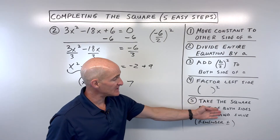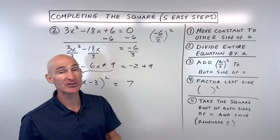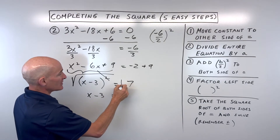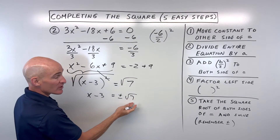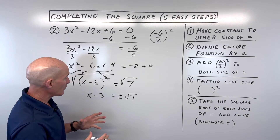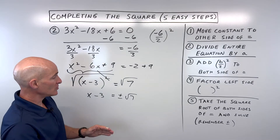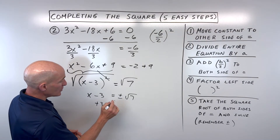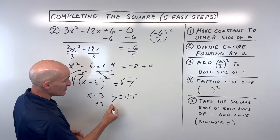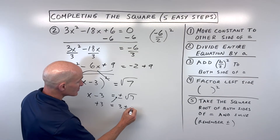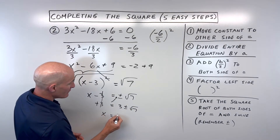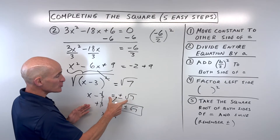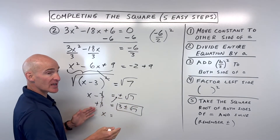The last step is to solve by taking the square root of both sides of the equation — remember the plus or minus. The square and square root cancel each other. We get plus or minus the square root of 7, which is not a perfect square so we leave it as is. You can either split it into two separate equations, or more efficiently, add 3 to both sides and write it as x equals 3 plus or minus the square root of 7. That's your final answer: 3 plus root 7 and 3 minus root 7.